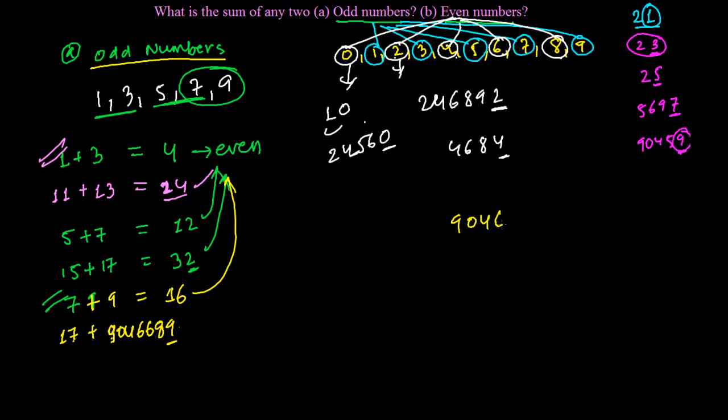So let me add this odd number, 9046689 and 17. So what I am going to get now? 9 plus 7, that is 16, and 1 is my carry. And 8 plus 1, 9 and 1, 10. Carry over again 1. So 6 plus 1, that is 7, and this 6 and this 4 and this 0 and 9.